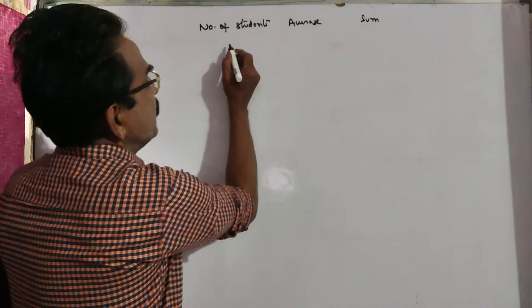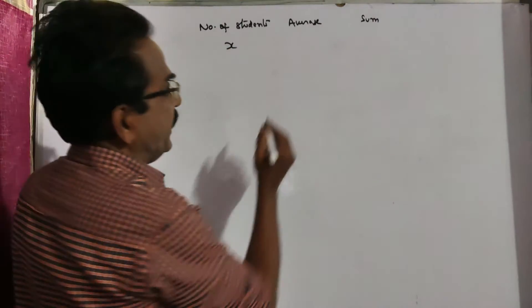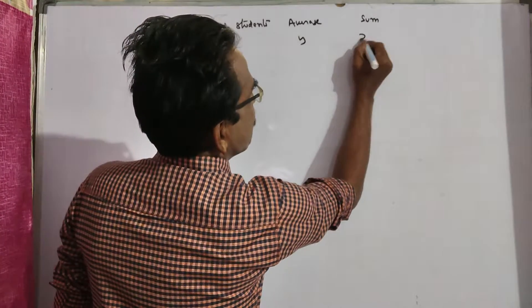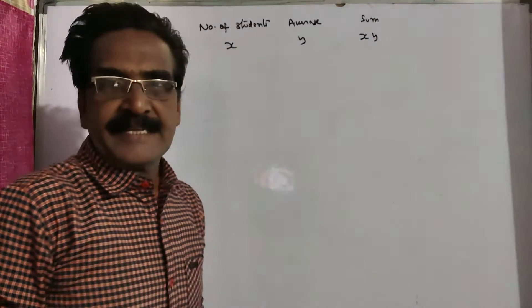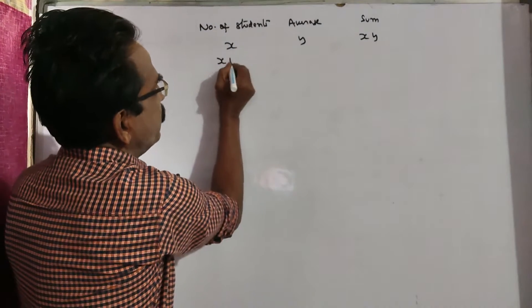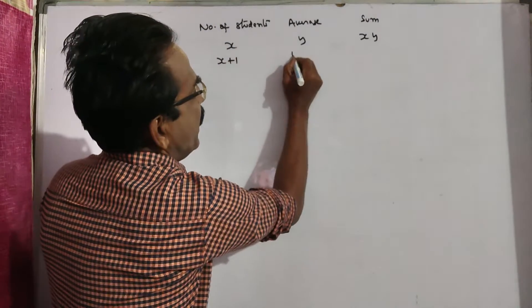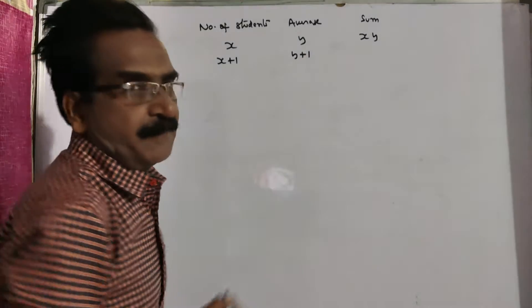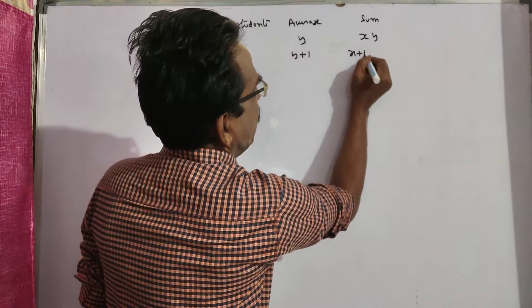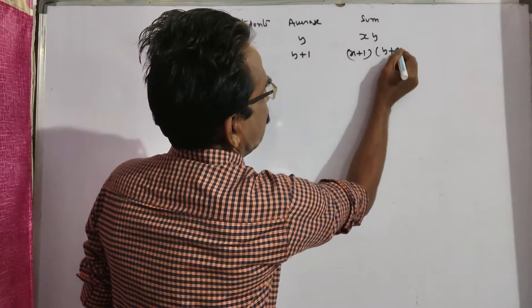Say friends, first say original number of students x and the average weight is y. Then sum of the weights is xy. Now one student is joined, students x plus 1. And with that average is increased by 1. So the sum is equal to x plus 1 into y plus 1.